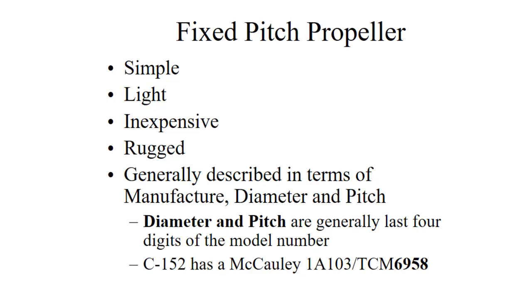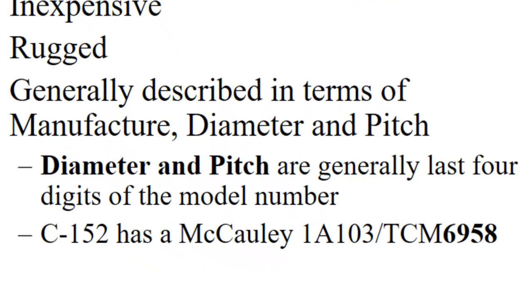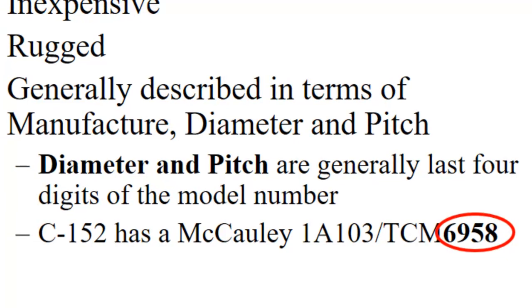Generally described in terms of diameter and pitch. And so, for instance, the 152 has a McCauley 1A103 TCM 6958. And it's those last four digits that you're interested in there. Because what they give you is the diameter of the propeller from tip to tip. And the pitch, which is 58 inches.